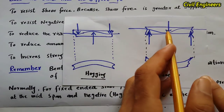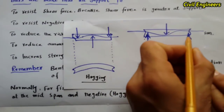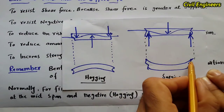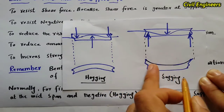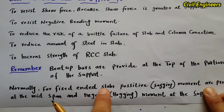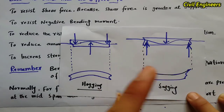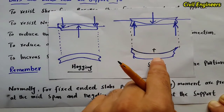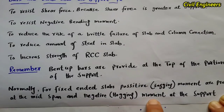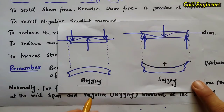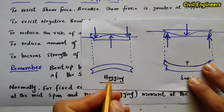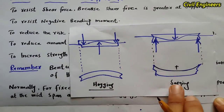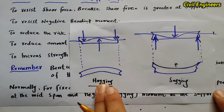Look at this diagram. This is the slab and the load is coming on it. These two are the supports. When the load is coming, it makes a shape like this — this is called sagging. So the positive sagging moment is present at the mid-span. And the negative hogging moment is at the supports at the ends. Hogging is produced with the negative bending moment, and sagging is produced with the positive bending moment.